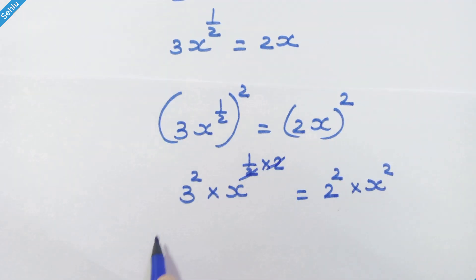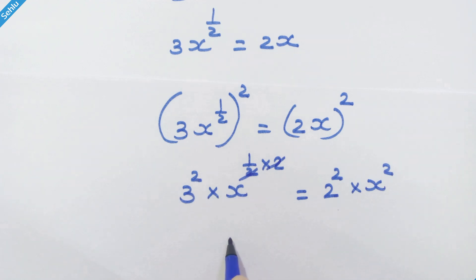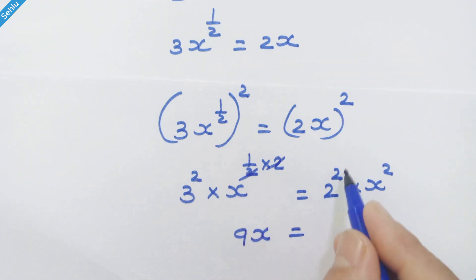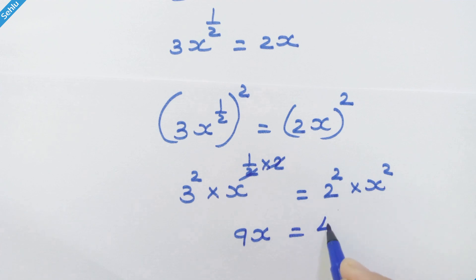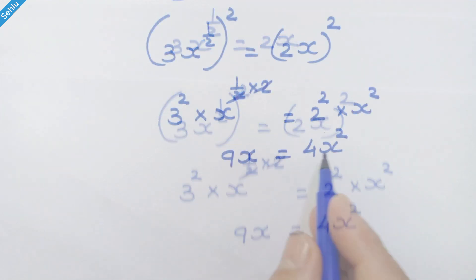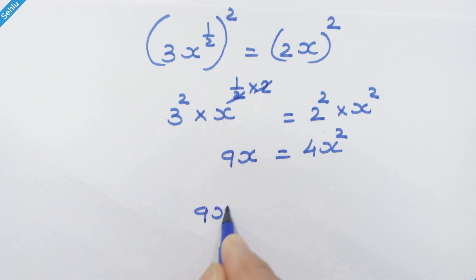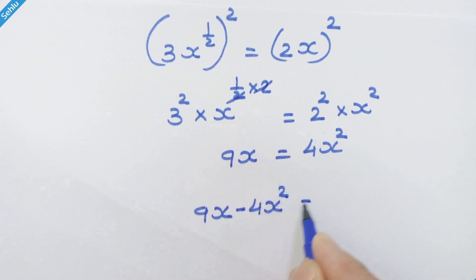The 2s cancel and 3 squared equals 9. So we have 9x is equal to 4x squared. Now let's move the 4x squared to the left-hand side, giving us 9x minus 4x squared is equal to 0.